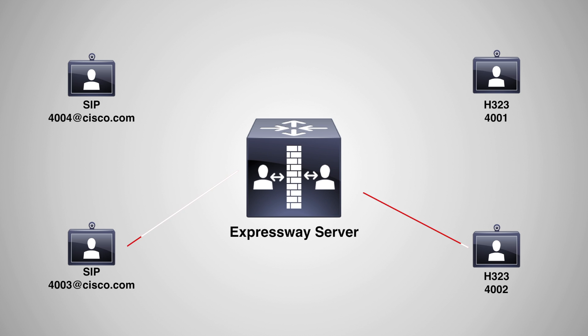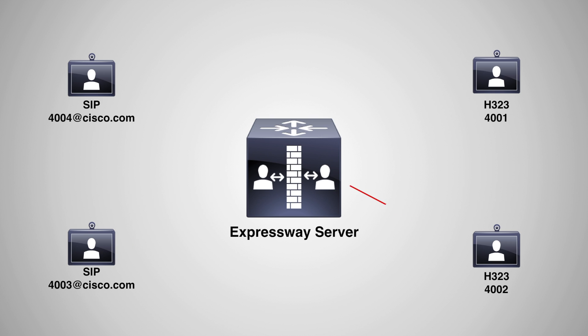The second search rule looks for any alias, so it searches for 4003@cisco.com — and this time a match is found, and the call goes through. That may seem like a lot of trouble, but the key benefit is that the user doesn't have to change their dialing behavior. They just dial 4003 like they normally would, and the call works the same as when there were only H.323 endpoints.